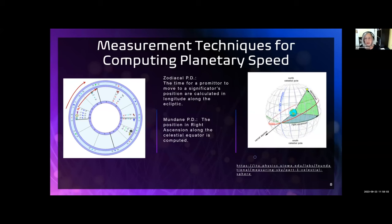There are two main ways of computing the time it takes for a promitor to reach a significator. The first is zodiacal, which computes the path along the ecliptic. And the second is mundane, which computes the path along the celestial equator in right ascension. For more details about that, there are a lot of YouTube videos and Martin Gansten's and Anthony Louis's books are good sources if you want the details for how these work.